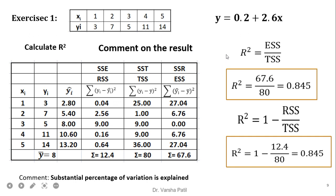Now, to calculate R-square, either we can do ESS/TSS or 1 minus RSS/TSS. It is very easy to build the table. Here, X and Y are given. As the line equation is given, we can calculate the predicted value.